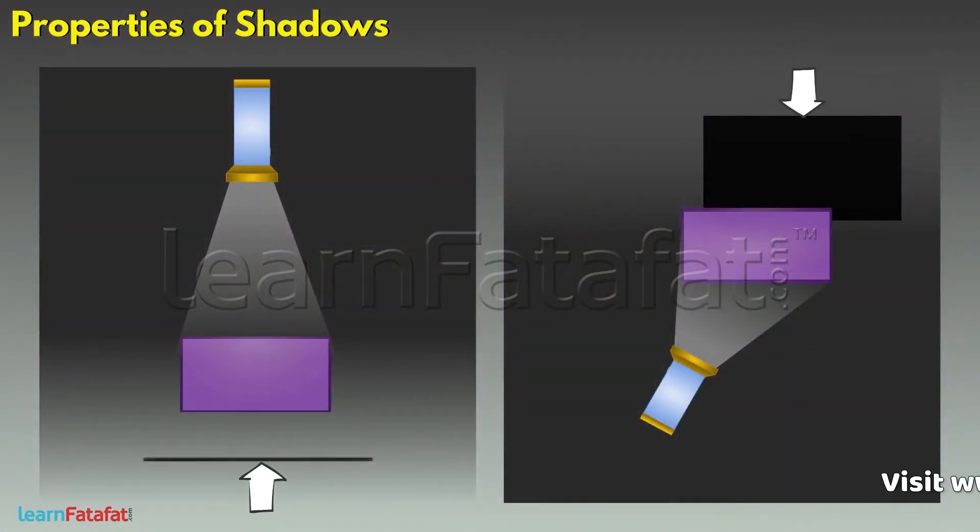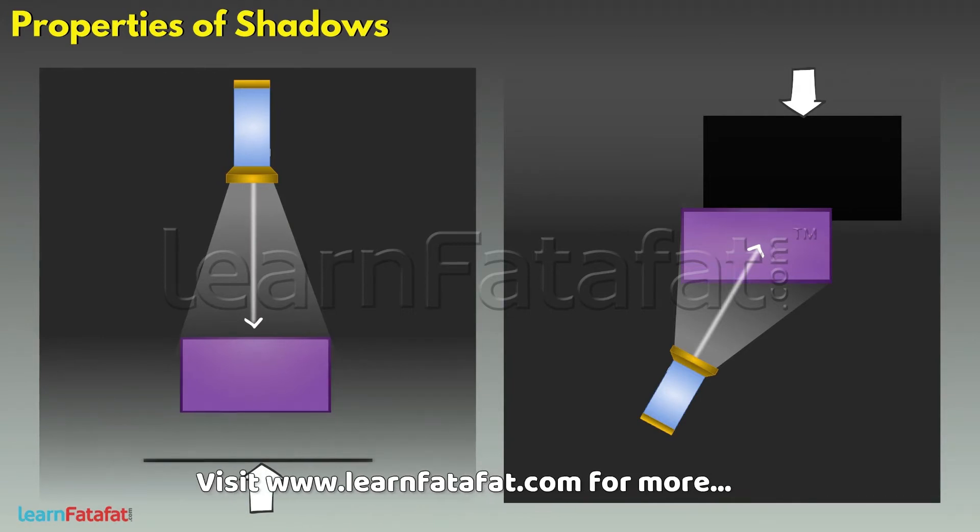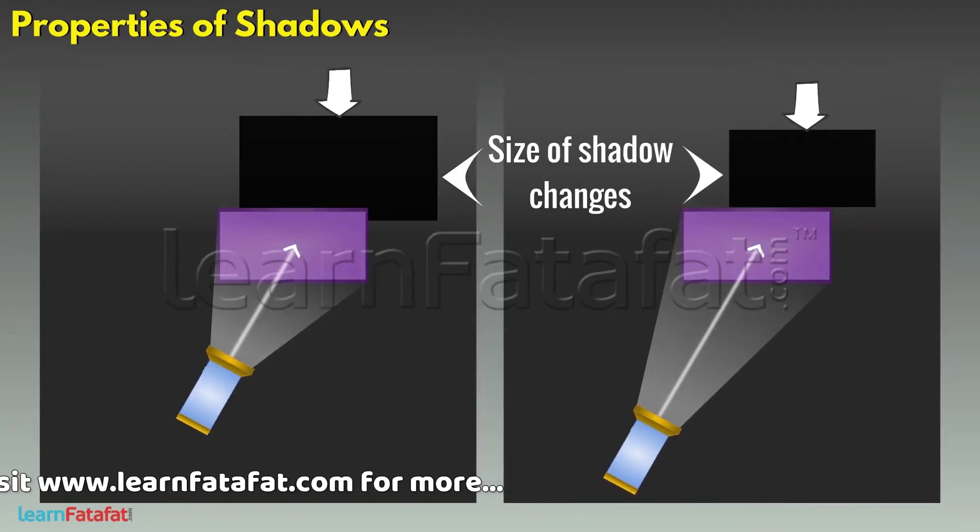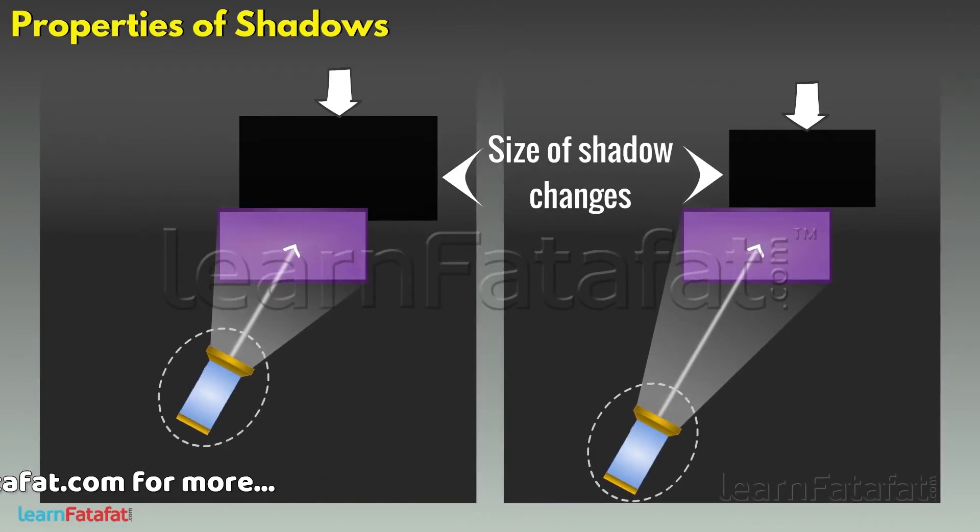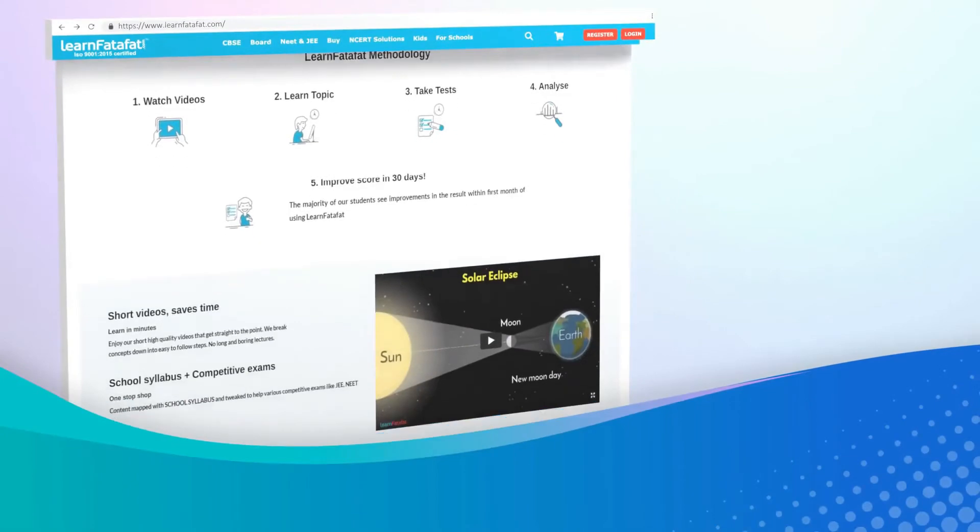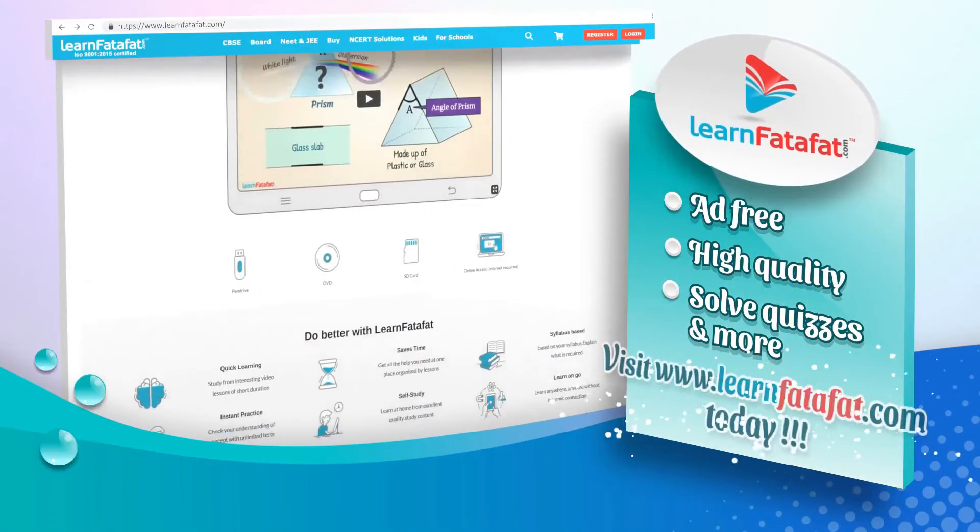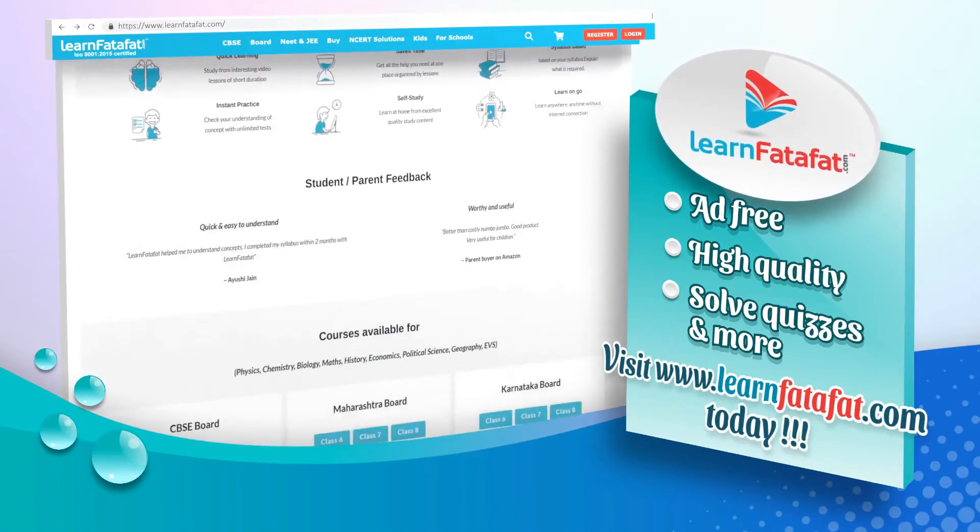The shape of shadow depends on the direction of light falling on the object. The size of shadow changes with change in position of the light source, the opaque object, or the screen.